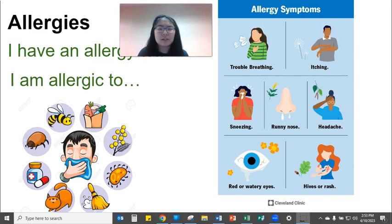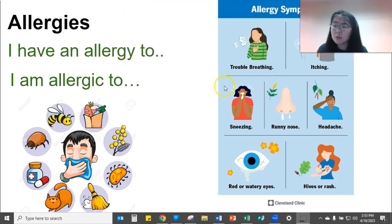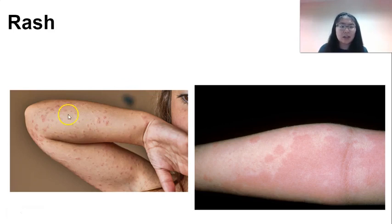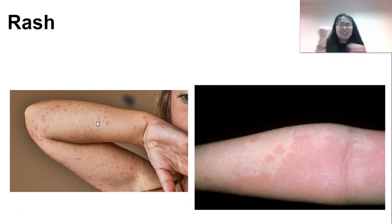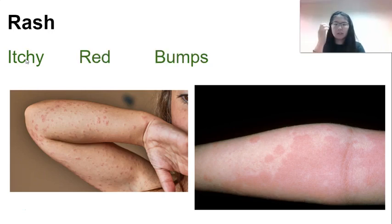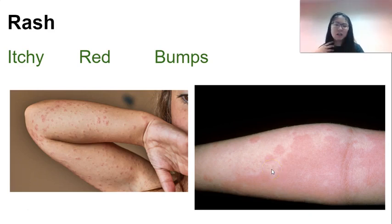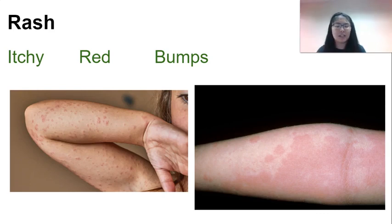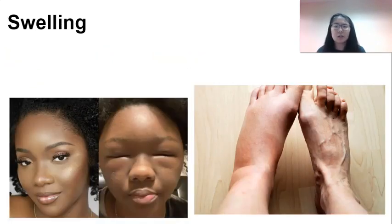Next are hives or a rash. A rash looks like bumps — really itchy, no fun. Itchy red bumps. Hives are where some of your skin is red and some is not; it might look different depending on your skin color. We call them splotches — little patches on your skin. Some allergy symptoms are more serious than others.